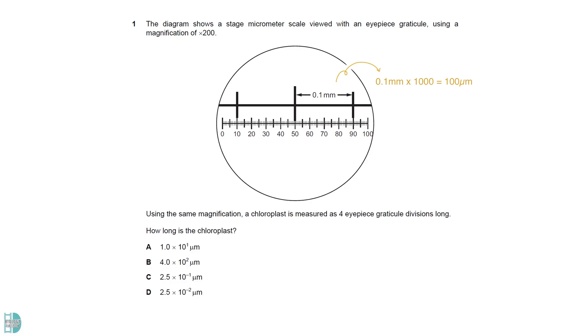0.1 mm is equal to 100 micrometers. 40 eyepiece divisions is 100 micrometers, so each division measures 2.5 micrometers. 4 eyepiece divisions are 10 micrometers, so the answer is A.